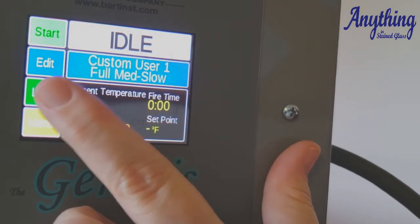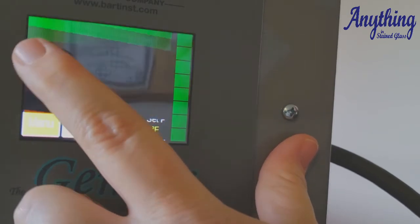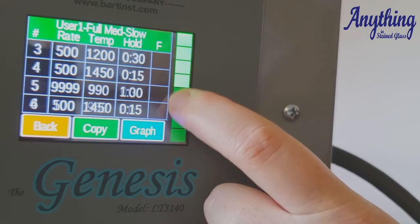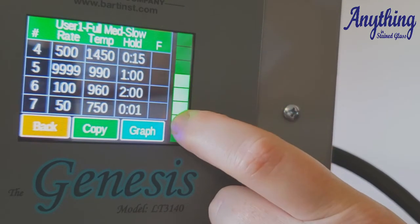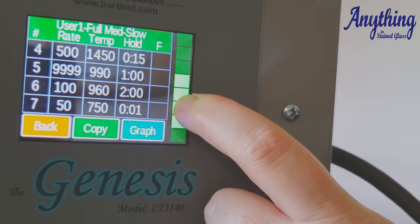So now we've got custom user 1, medium, slow. So if you look here at your profile, you can see that it's doing a medium speed profile.